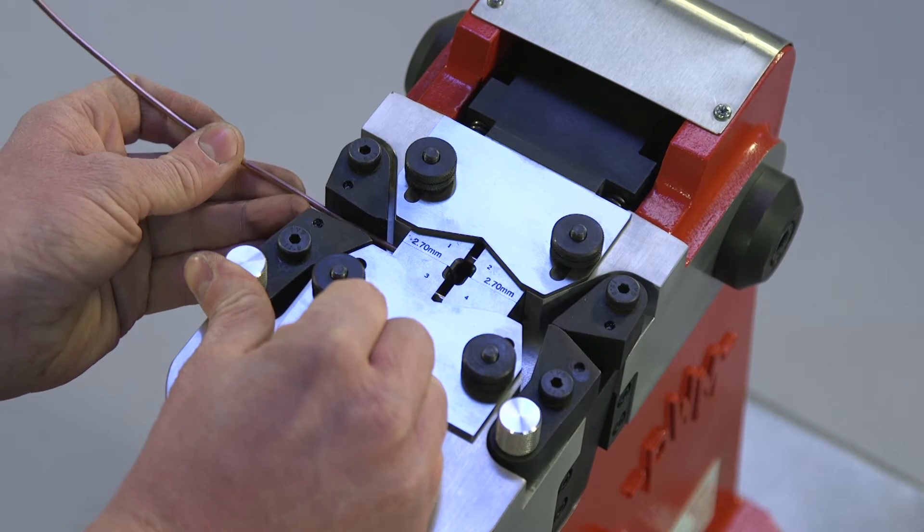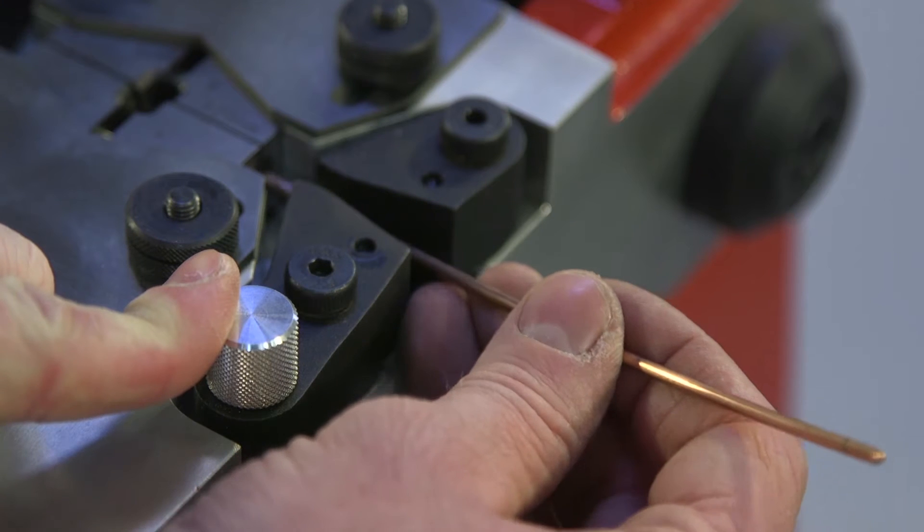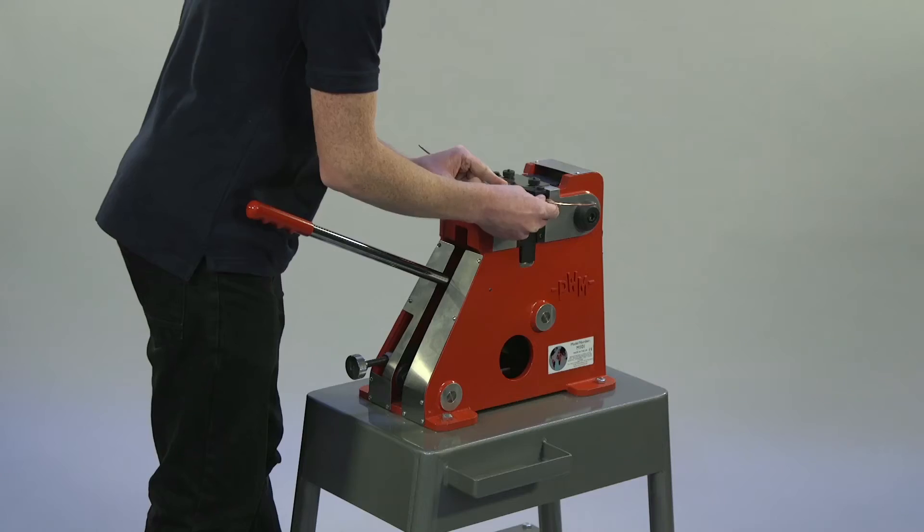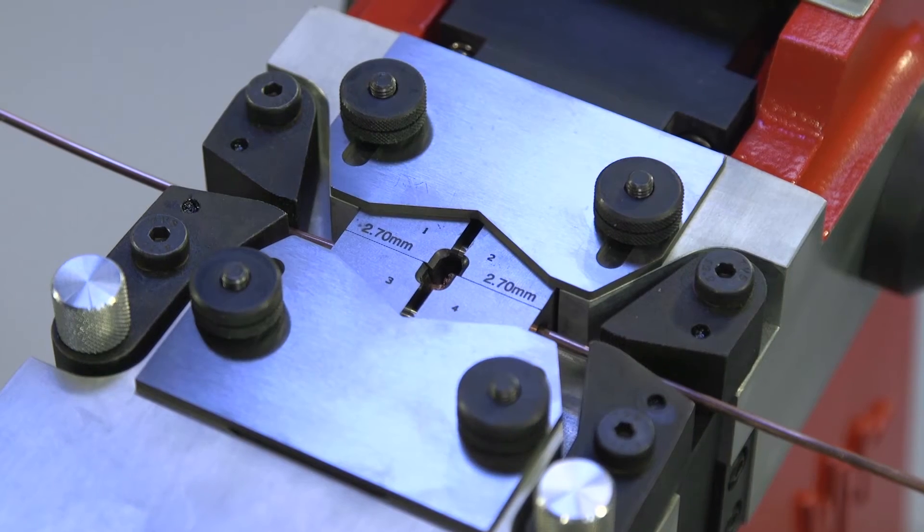The wire or strip is quickly and easily inserted into either side of the machine and the handle of the machine is depressed 4 or 5 times to complete the weld.